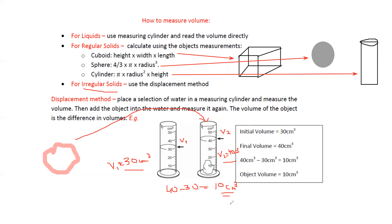To summarize: for a regular solid with a definite shape, use the formula. For an irregular solid, use a measuring cylinder with the displacement method. For a liquid, simply pour it into the measuring cylinder and read the volume directly.